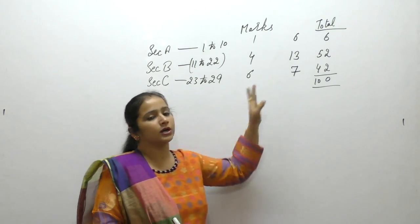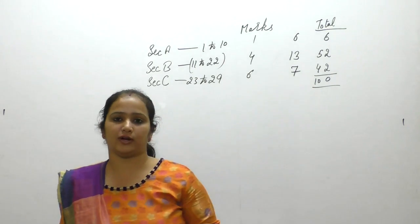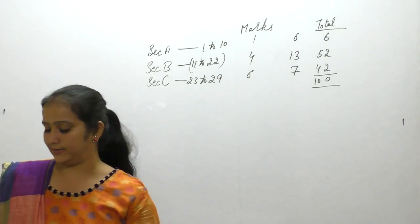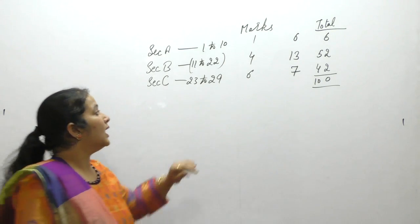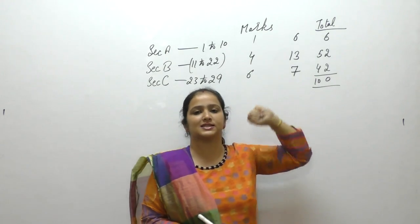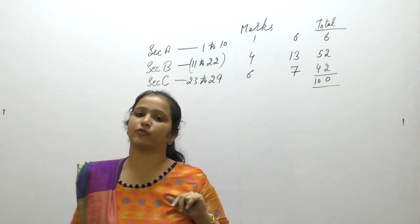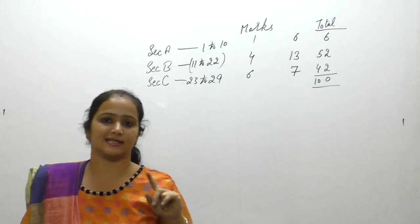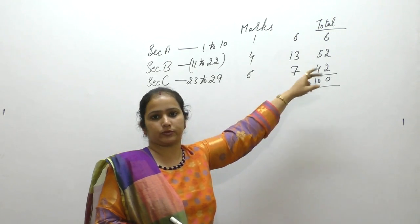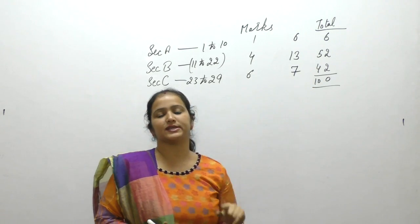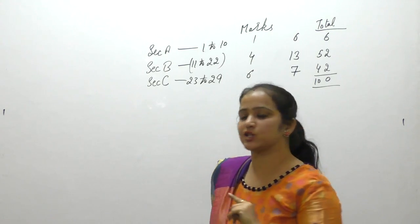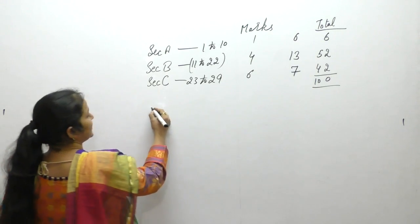You should prepare for that potential pattern change so you will be ready. First of all, let's go back to Section C — the number of questions is less (7 questions) but the marks are 42. So first of all, we should prepare for that part. This is Section C.